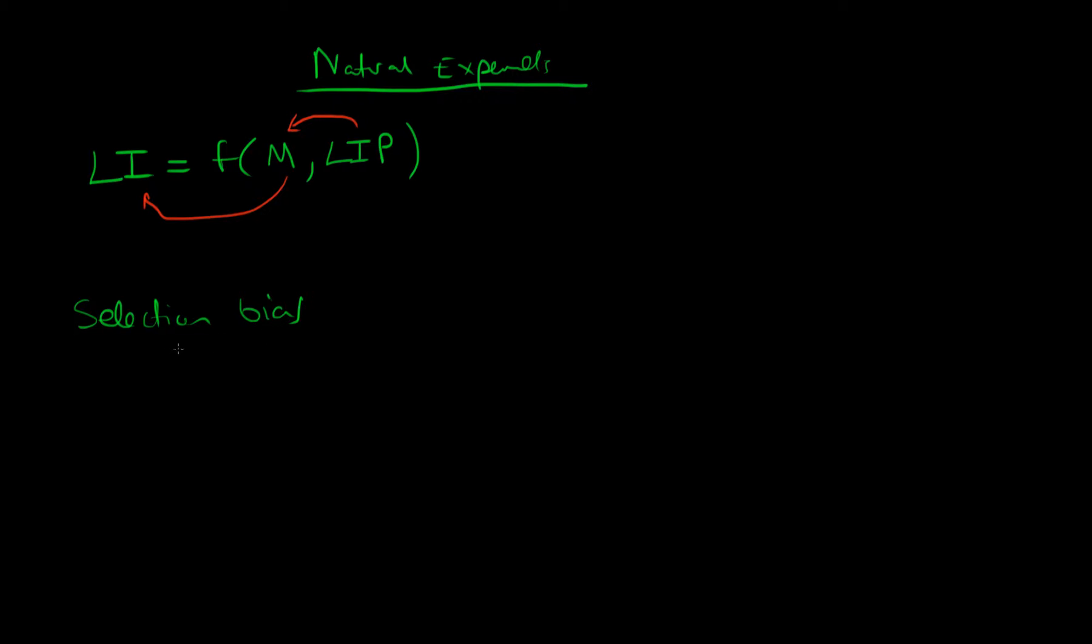This sort of problem has a name in econometrics and we call it selection bias, which means that the individuals which participated in our experiment or quasi-experiment in this case might be a different type of individual to those which are part of the control group, so the individuals who are civilians in this case. So it's not a very pure experiment and nor does it allow us to exactly unpick the causal effect of joining the military on lifetime income.